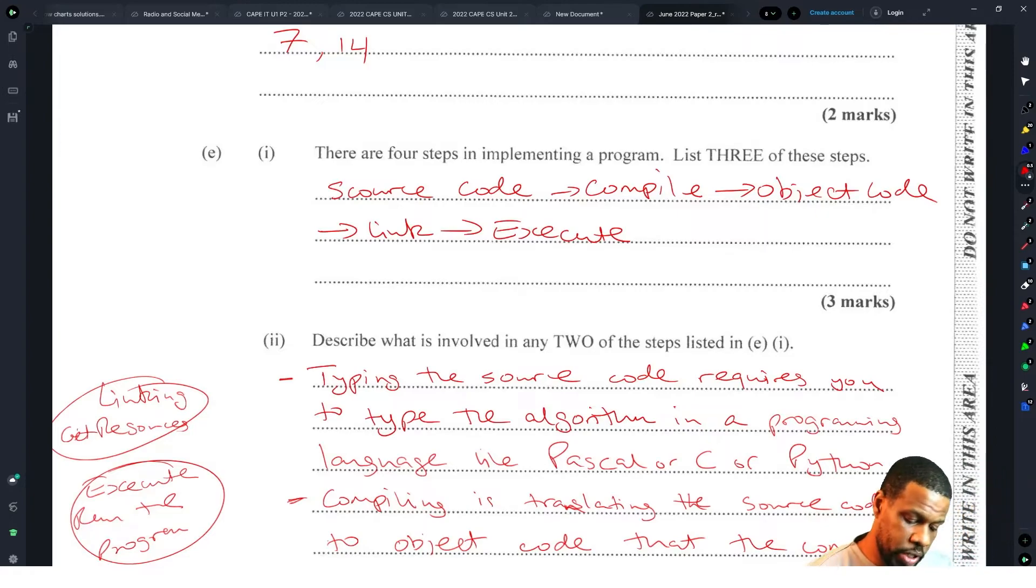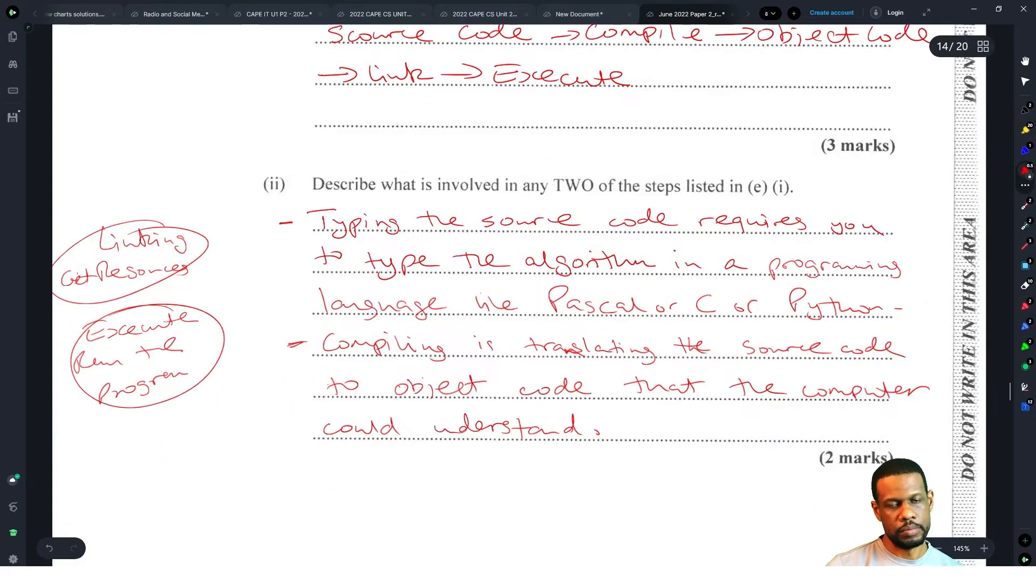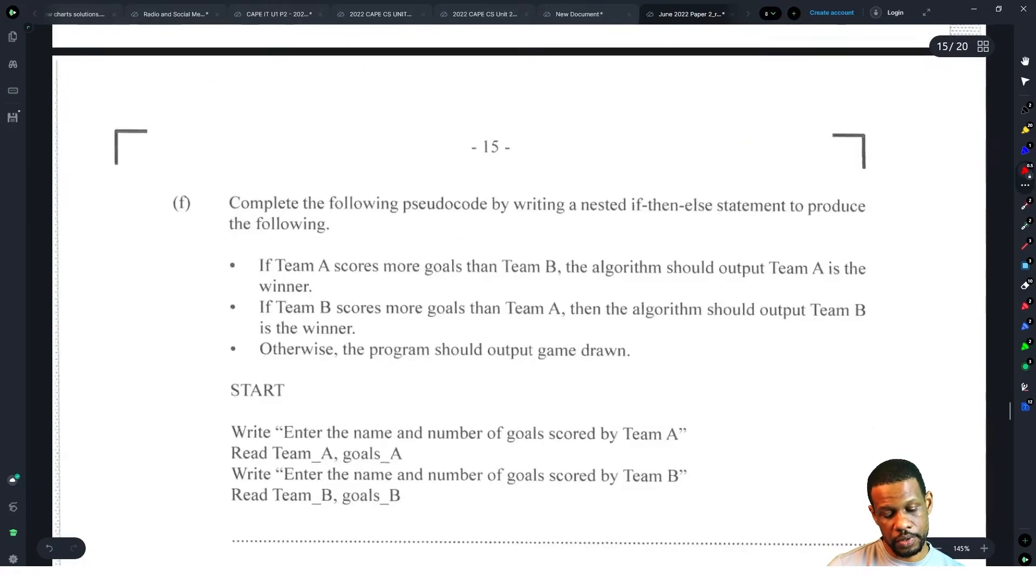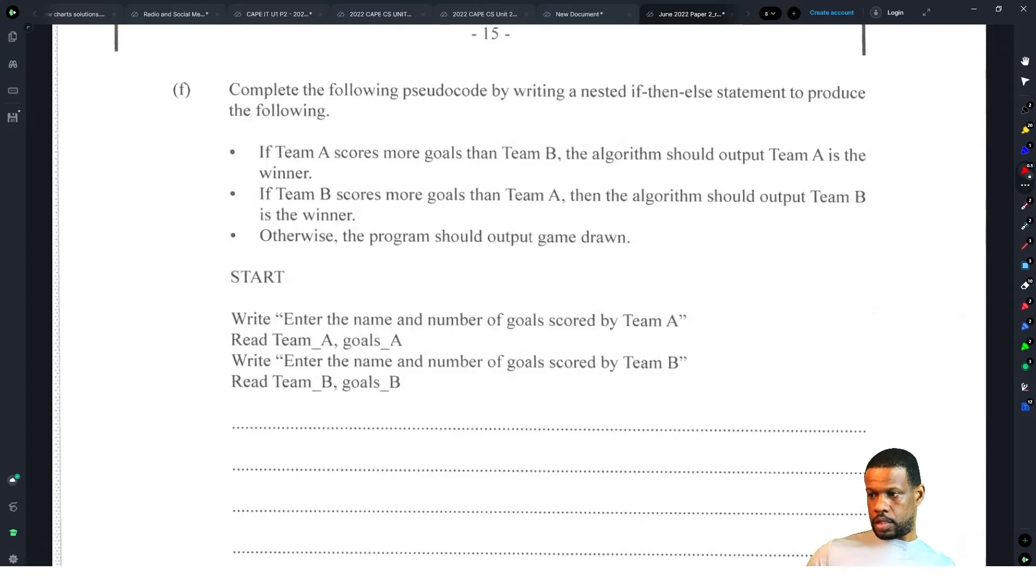Please don't mix up these steps in implementing a program for the program development life cycle. This is not the program development life cycle like they're talking about, which is plan, analyze, implement, review, document. That is not what they're asking. They clearly are asking what are the steps in implementing a program - you want to know from source code all the way down to executable. If you put the life cycle, that's wrong.